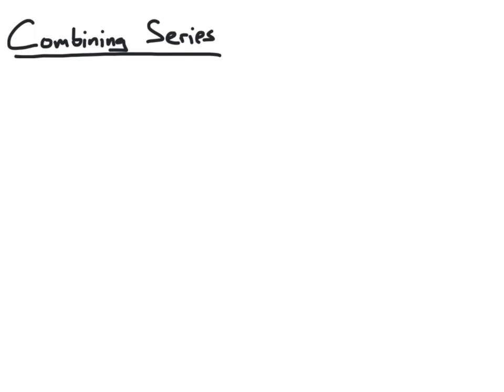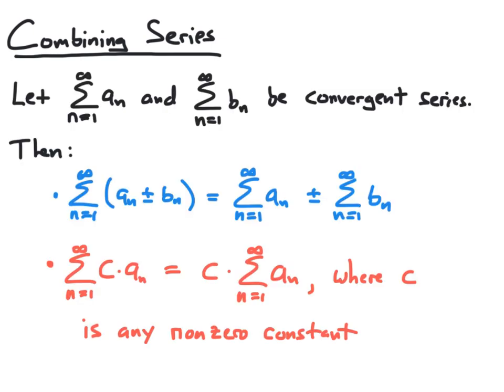In this video, we're going to discuss a couple of basic ways of how to combine two series to make a new series. Suppose we start with two sequences, n equal 1 to infinity of a sub n and n equal 1 to infinity of b sub n, and both of these sequences are known to be convergent. This is an important distinction, as what we're about to do only applies to convergent series.